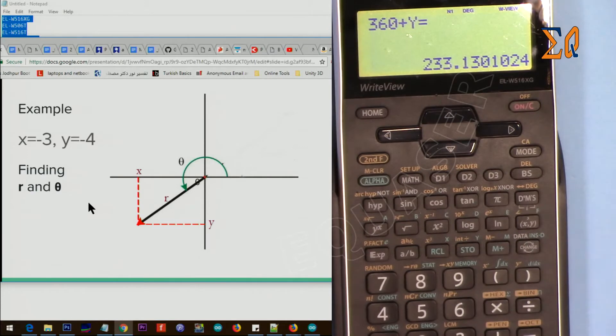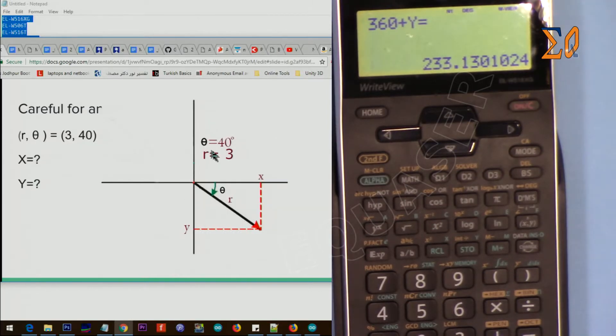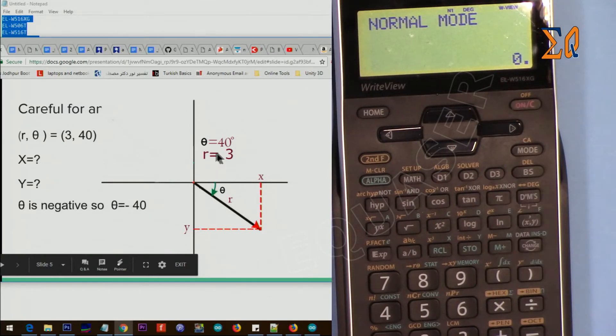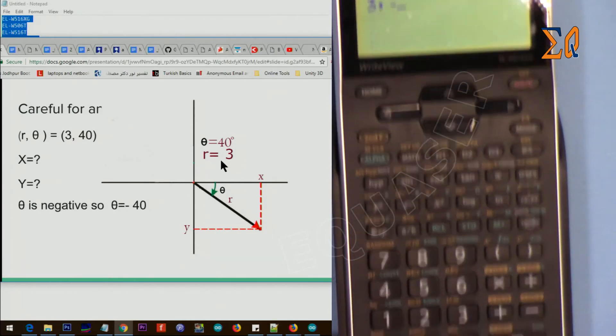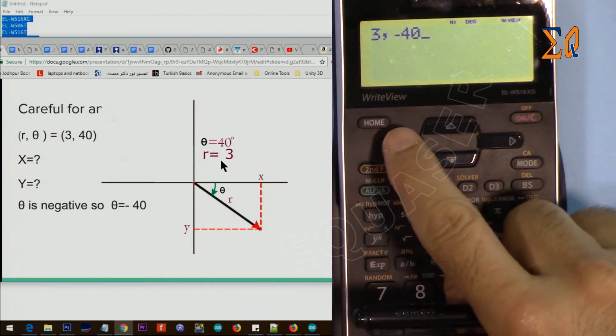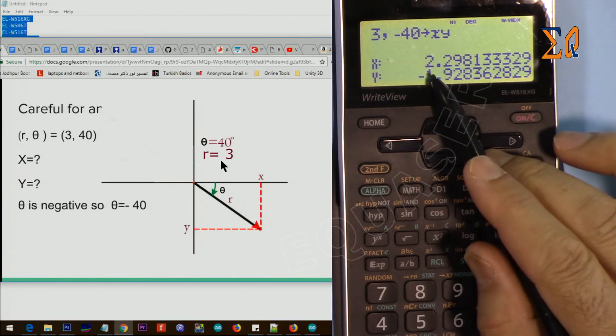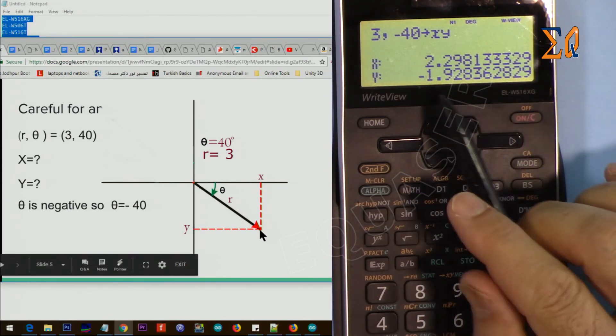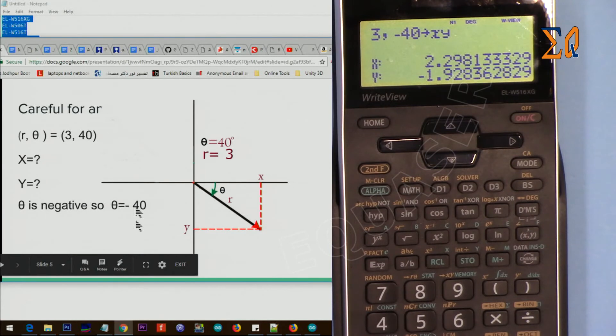Now we want to... We have this coordinate. Magnitude is 3, and this angle theta is 40. Now to calculate this, we have to be careful that theta is negative, so we have to enter negative 40. Now I'm entering 3, comma, negative. I press this negative, 40, and then second function. It gives us X is 2.29, and then Y it gives us negative, which is correct. If you don't give that sign properly, you will not get this, and it will be in other quadrant.